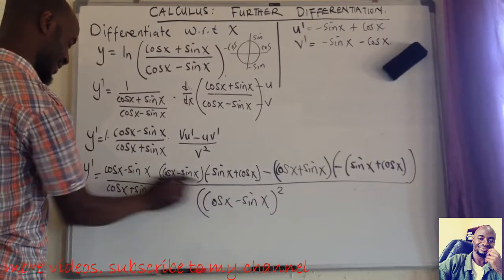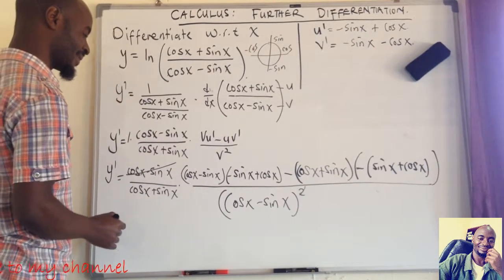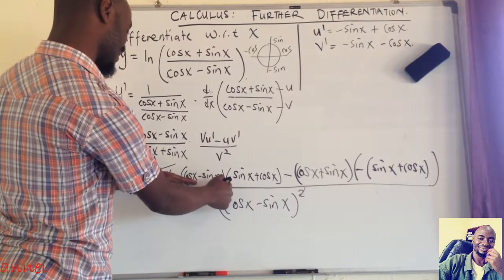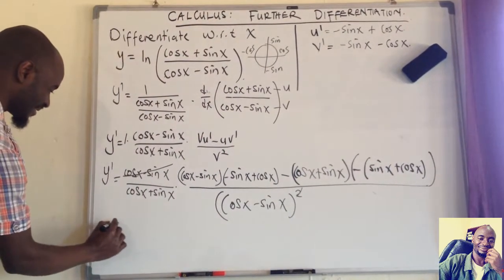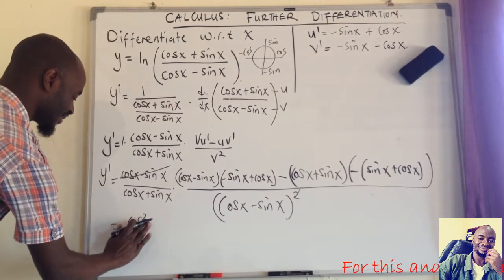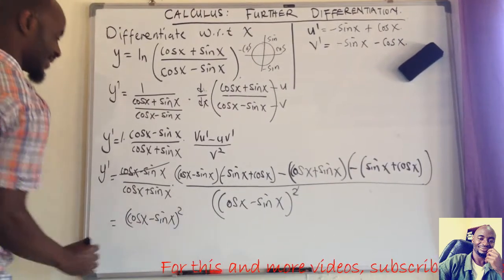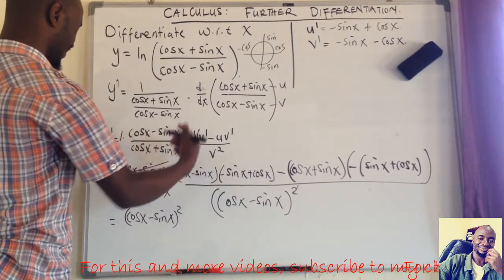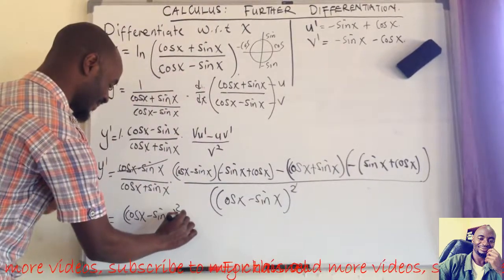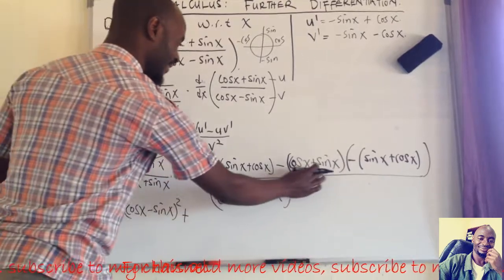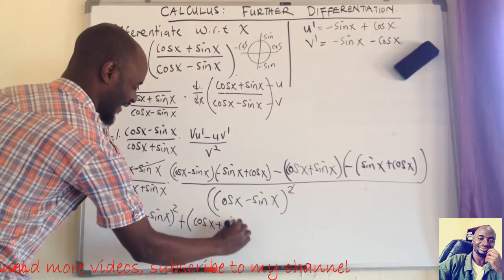Now looking at the expression, things simplify. The (cos x − sin x) factors cancel with one from the denominator. Then we notice that the numerator terms appear twice each. The minus and minus signs combine to give a positive, so we get (cos x − sin x) squared. Similarly the other pair gives a positive (cos x + sin x) squared, using the difference of two squares factorization.